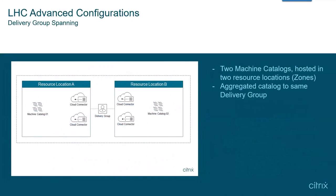In some instances, a Citrix DAS deployment may require multiple machine catalogs hosted in different resource locations but managed by a single delivery group. Deployments spanning across zones create a special situation when one zone or resource location goes into outage mode and the other remains online. Storefront is configured with all connectors as delivery controllers, and whether online or in outage mode, the launch request will be sent to either resource location to respond with the correct broker data based on session data, new launches or reconnects, and launch readiness of the resources.